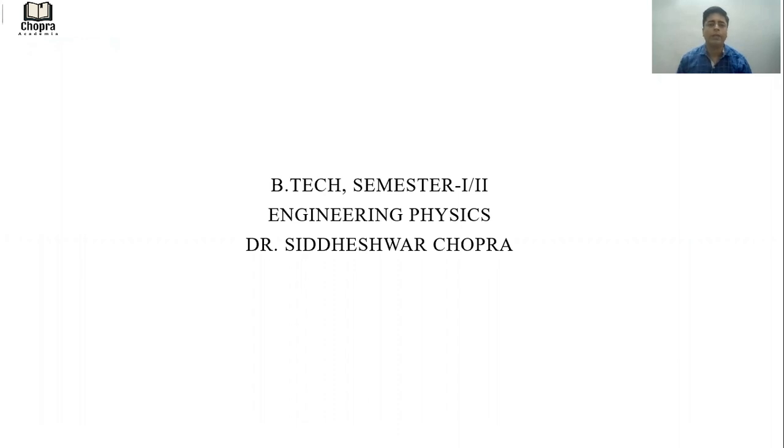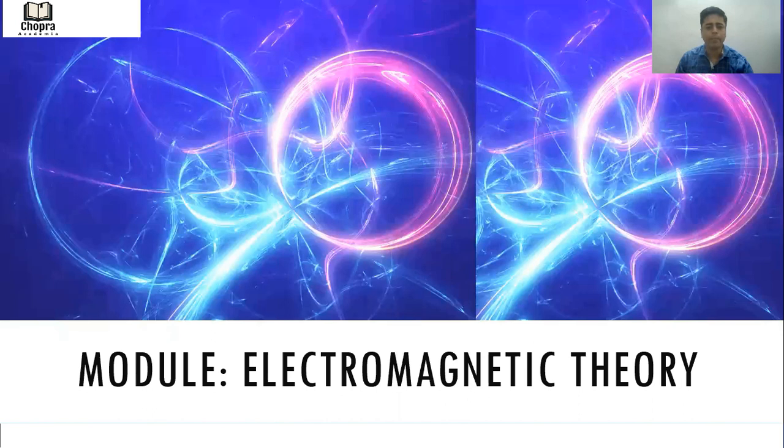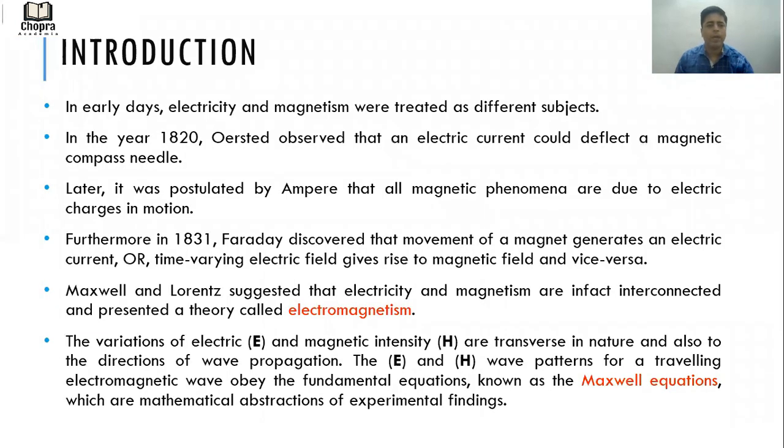In early days, electricity and magnetism were treated as different subjects. In the year 1820, Oersted observed that an electric current could deflect a magnetic compass needle.